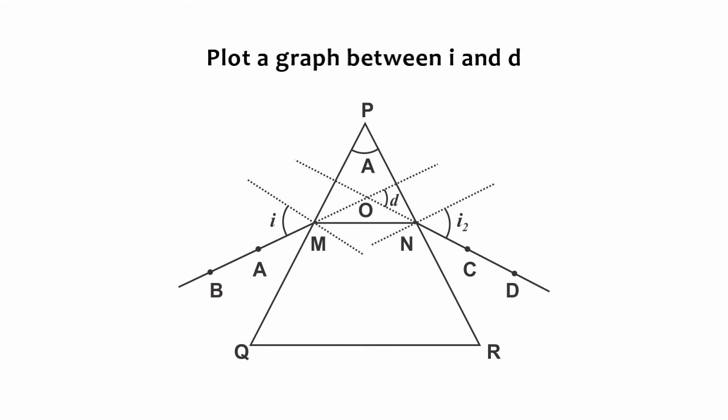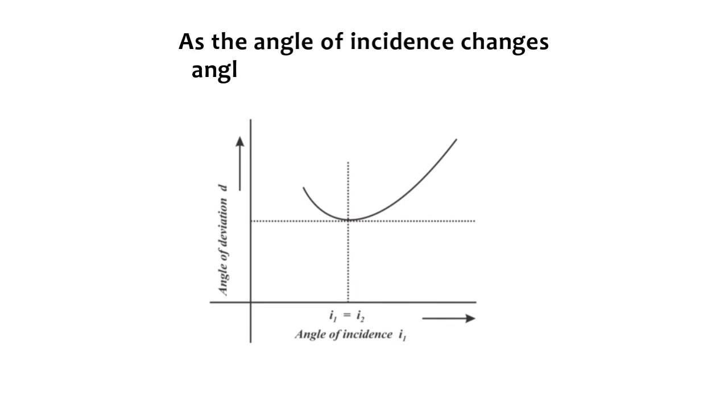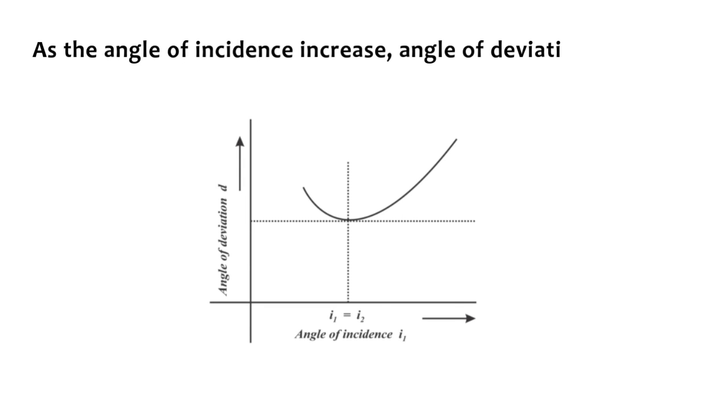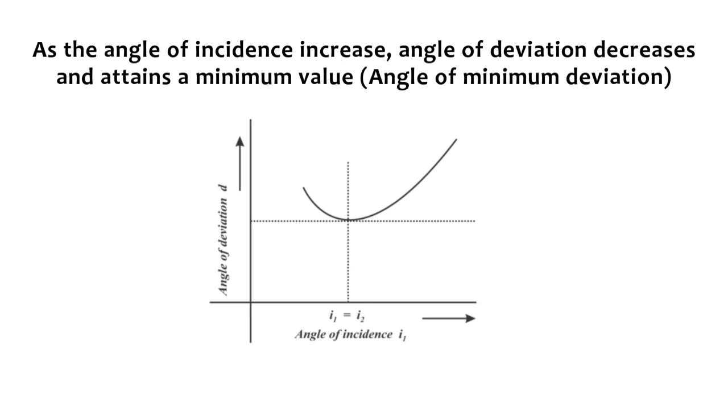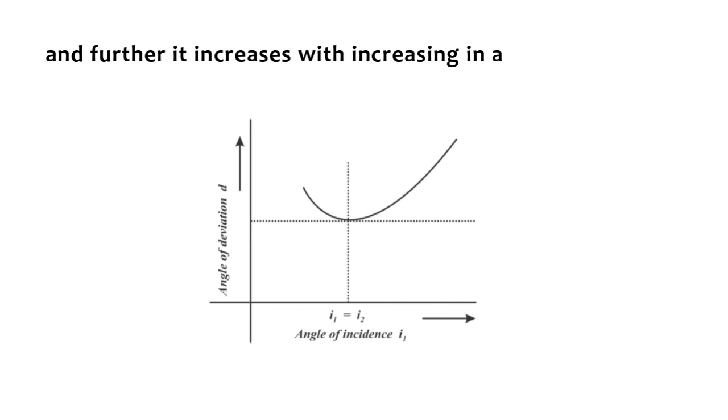Plot the graph between I and D. As the angle of incidence changes, the angle of deviation decreases and attains a minimum value, and further, it increases with an increase in the angle of incidence.